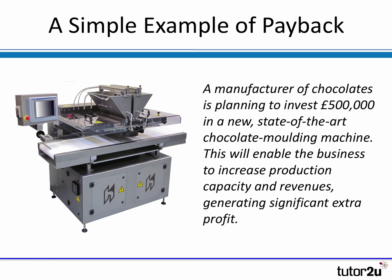Let's take an example. This is a chocolate moulding machine. In our example, a manufacturer of chocolates is planning to install a half a million pound new state-of-the-art chocolate moulding machine, with the aim of increasing the capacity of the business, enabling it to produce more chocolates, generate extra revenues and profits — hopefully some positive cash flows from making that initial investment.